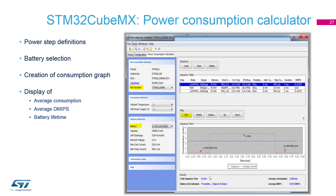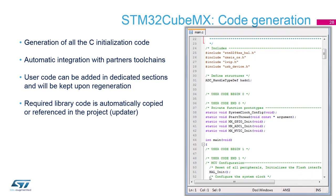The last one is the power consumption calculator. You can compute the consumption of the microcontroller. For example, for a door locker, you can compute the energy used for opening and for sleep. After that, you can calculate the battery capacity you will need.